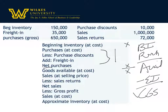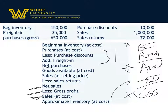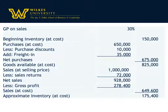What we have is net sales, and we subtract out our gross profit, and we end up with what's called sales at cost — which is basically our cost of goods sold. Once we know our cost of goods sold, we back up and find the ending inventory. Our first example is going to be a gross profit markup on sales of 30%.